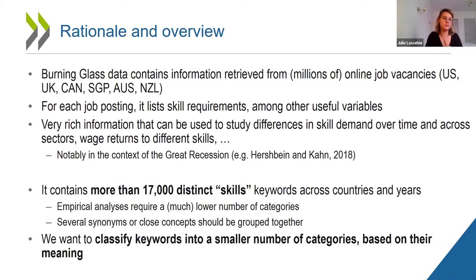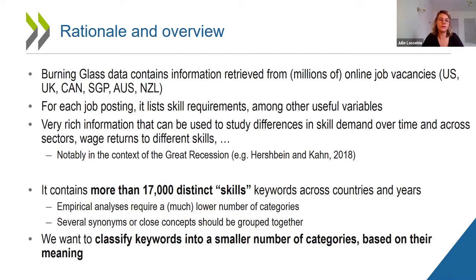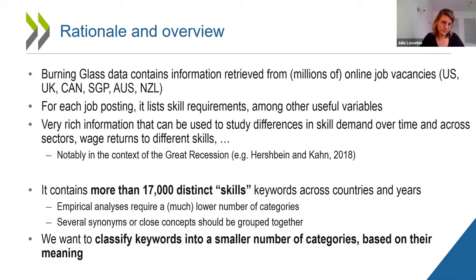This data can be used to study differences in skill demand over time across sectors and to analyze wage returns to different skills. It has been used in the context of the Great Recession to analyze the impact of the crisis on skills demand. The dataset contains more than 17,000 unique skill keywords — very rich information, but not very practical for empirical analysis. Several keywords are actually synonyms or very close concepts, such as teamwork and communication, that should be grouped together.